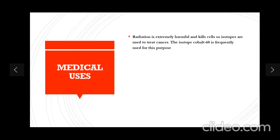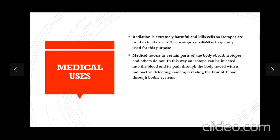Medical uses: radiation is extremely harmful and kills cells, so isotopes are used to treat cancer. The isotope Cobalt-60 is frequently used for this purpose. They also act as medical tracers, as certain parts of the body absorb isotopes and others do not. In this way, an isotope can be injected into the blood and its path through the body traced with a radioactive-detecting camera, revealing the flow of blood through the bodily system.